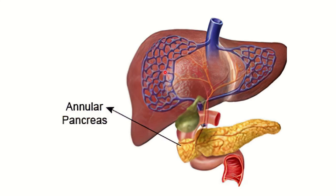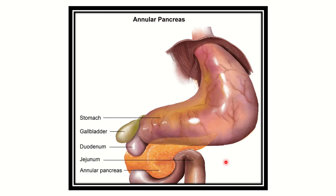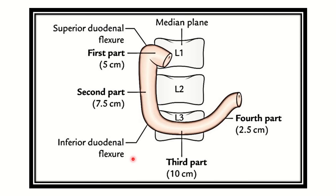Let's look at the structure. Here we can see the liver, the inferior vena cava, the gallbladder, and the C-shaped duodenum. We can see the pancreas — this is the annular pancreas. This pancreatic structure covers 360 degrees of part of the duodenum. Here we can see the annular pancreas and the different parts of the duodenum.